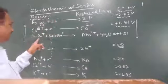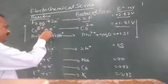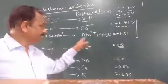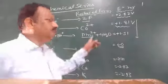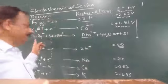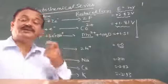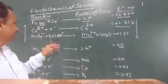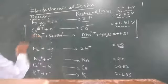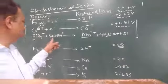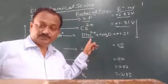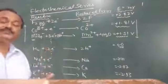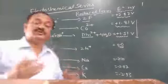Now coming to the permanganate ion — MnO₄⁻ ion. Under acidic medium it will gain 5 electrons to form the Mn²⁺ ion (aqueous). You know MnO₄⁻ has a pink color and Mn²⁺ is colorless. This is the reason behind the oxidizing character of the permanganate ion. In MnO₄⁻, manganese has an oxidation state of +7. It gains 5 electrons to form Mn²⁺. The standard potential value here is +1.51 volts.